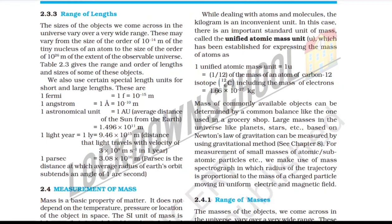The mass of commonly available objects can be determined by a common balance, like the one used in a grocery shop. Large masses in the universe, like planets and stars, can be measured using the gravitational method based on Newton's law of gravitation.